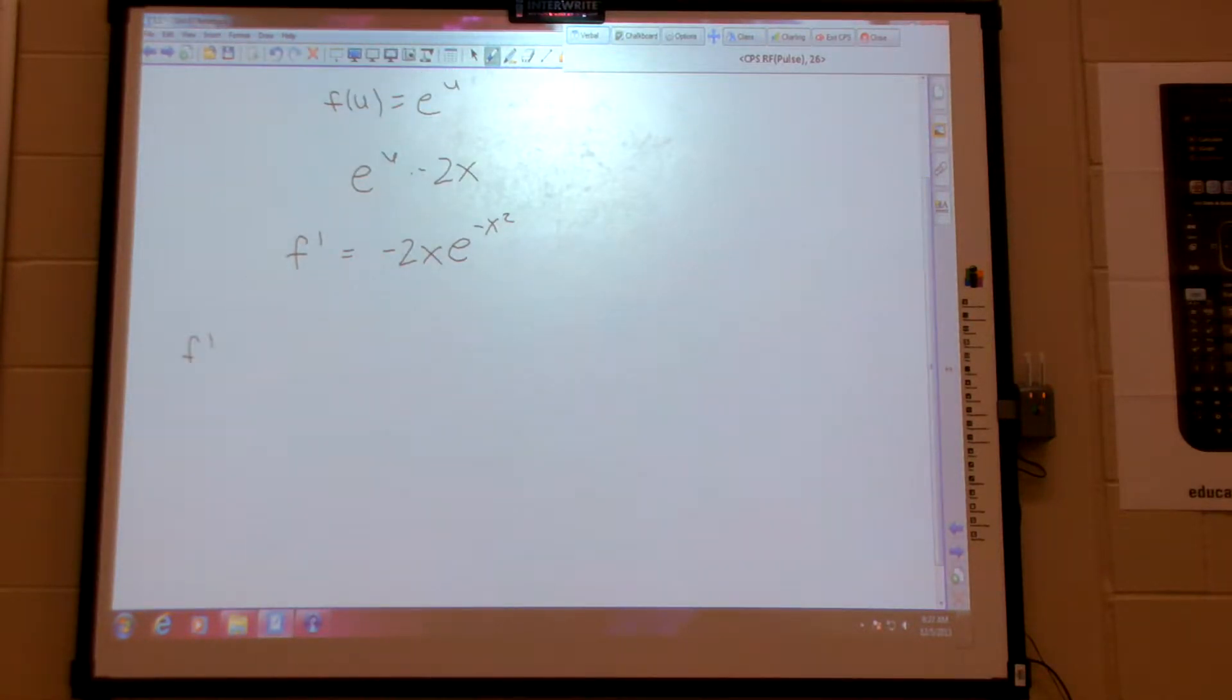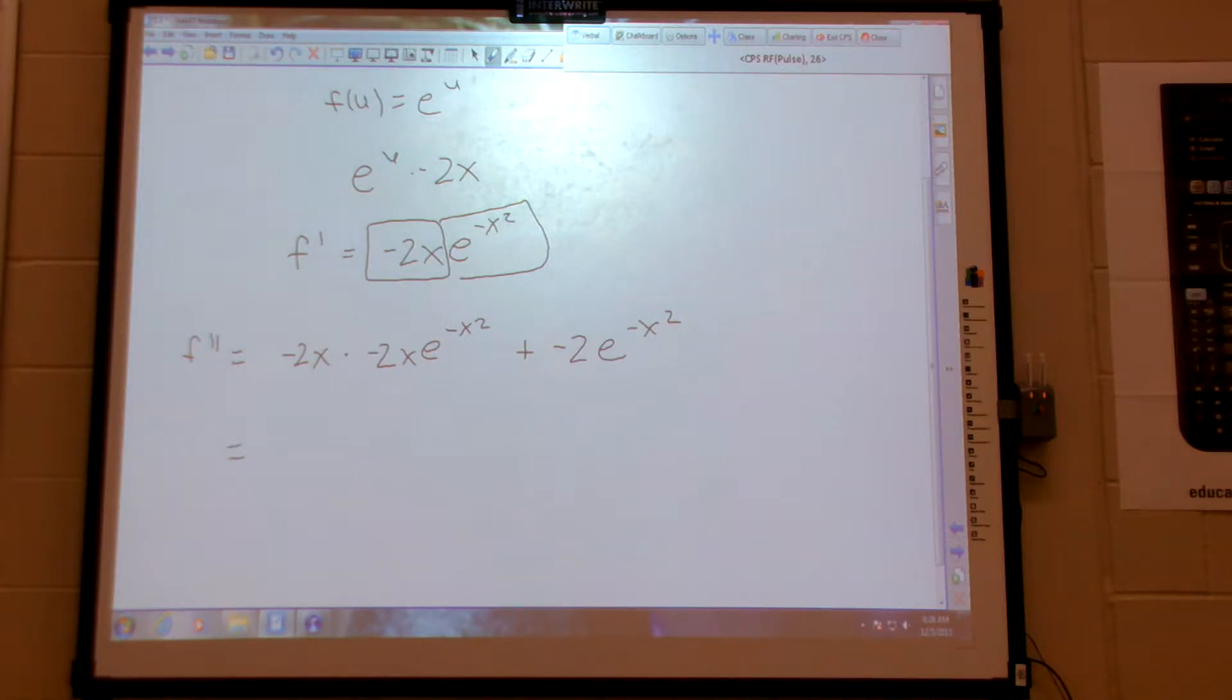Second derivative. Product rule here. The first times the derivative of the second. Well, let's be smart about this. Didn't I just do this derivative and got this? So negative 2x e to the negative x squared, plus the derivative of the first is negative 2 times the second. Let's clean that up. 4x squared e to the negative x squared minus 2e to the negative x squared.